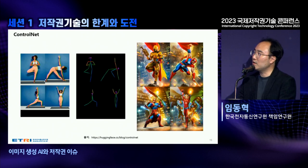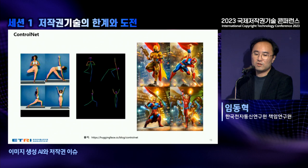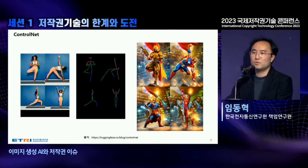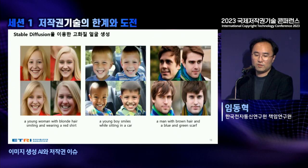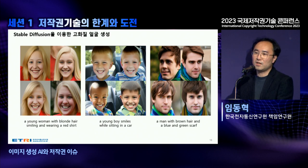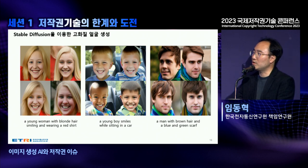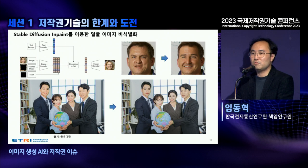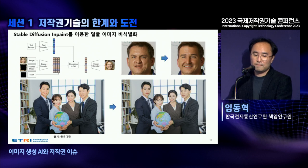For example, you take a picture of a person doing yoga, collect the joint-related information from the photo, and then ask the engine to draw a superhero. By using the existing picture, you can draw a totally new and different picture. We used Stable Diffusion to generate high-resolution faces at 1024x1024, and it created them successfully. Without using the Transformer structure, you can use the Diffusion Model to de-identify the face of a person.